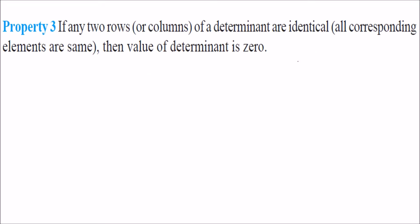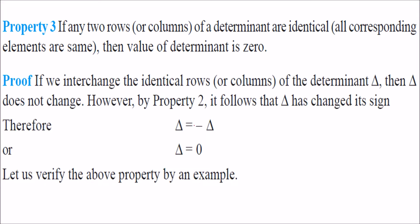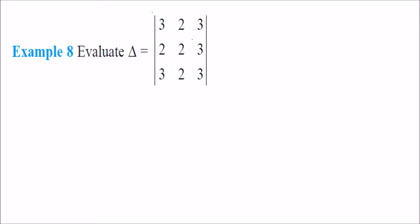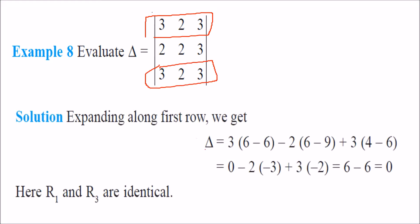Property 3: if any two rows of a determinant are identical, the value of the determinant is 0. This follows easily: if we interchange the identical rows, the determinant does not change, but by Property 2 it must become minus itself, so delta = −delta, giving delta = 0. For example, if the first row and third row are exactly the same, when you expand using any row, you will get 0, because R1 and R3 are identical.